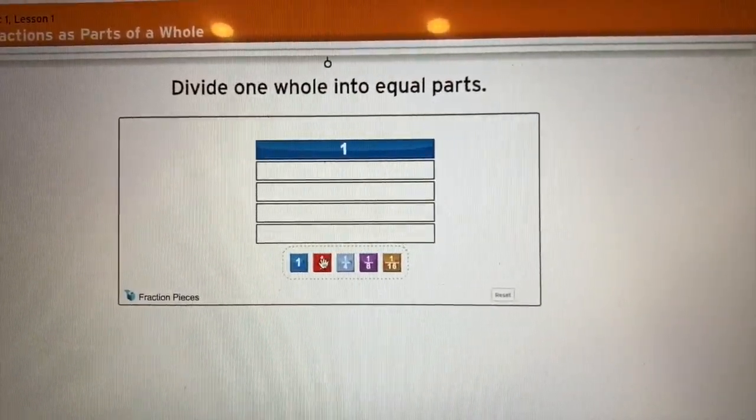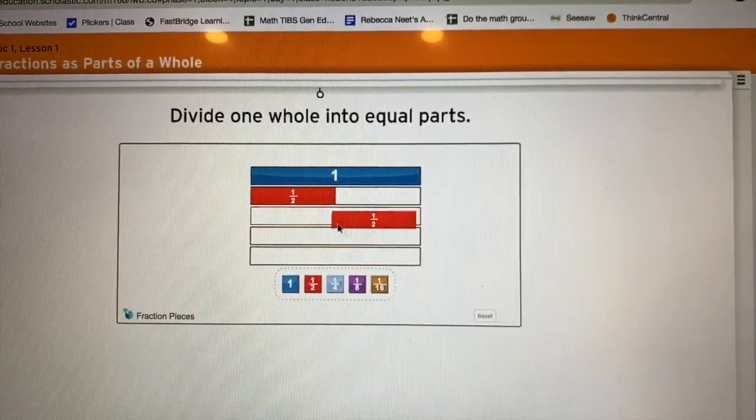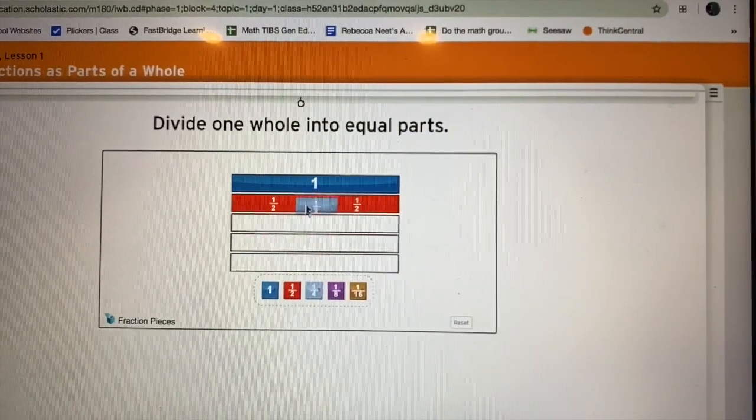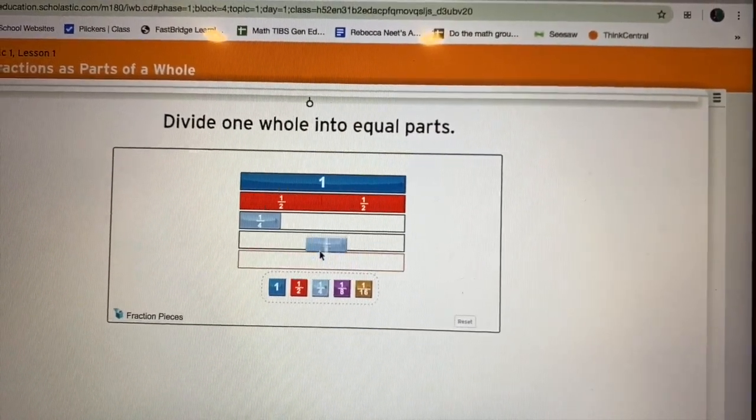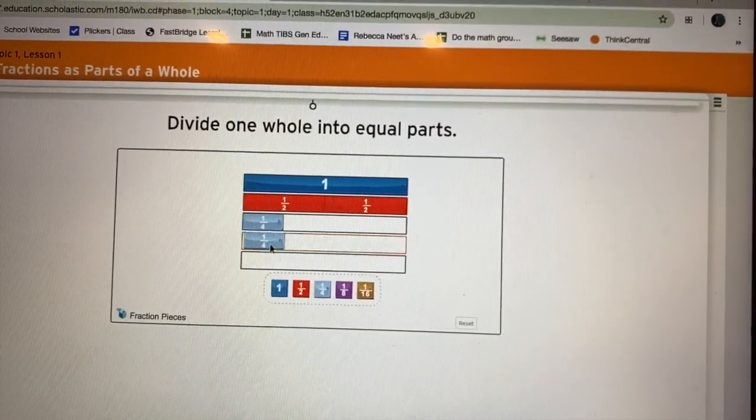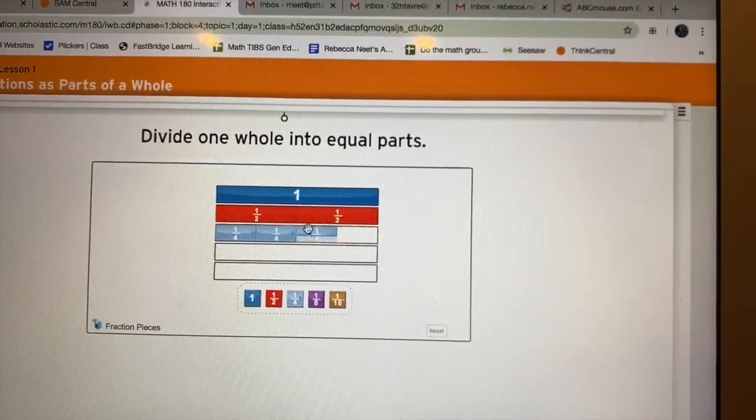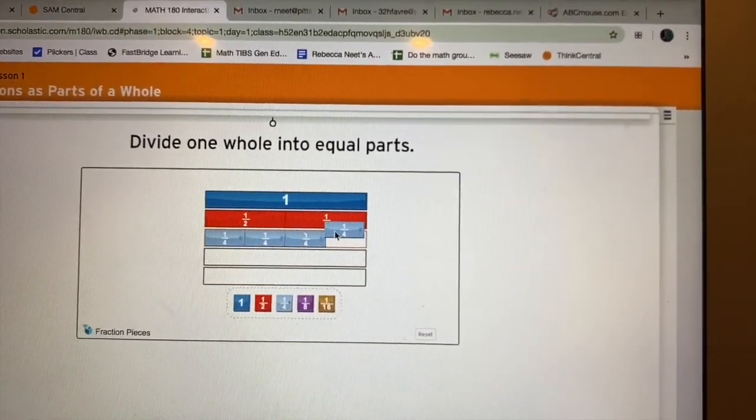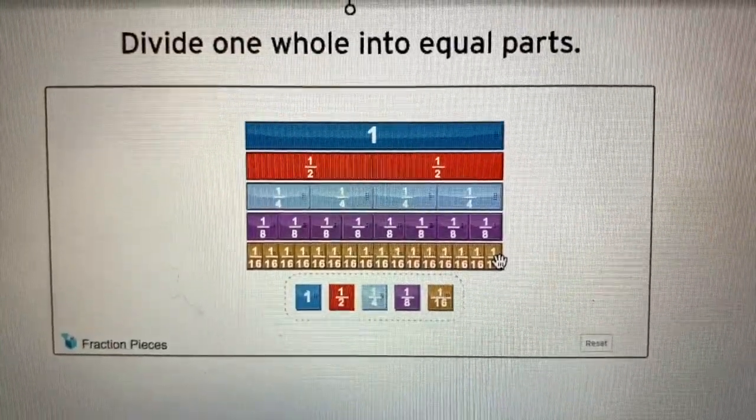I can do two halves that also equal that whole. I can use four fourths. Notice I'm not putting them exactly where they belong within the row. The computer is locking them into place for me which is nice but in reality things don't lock into place that easily.